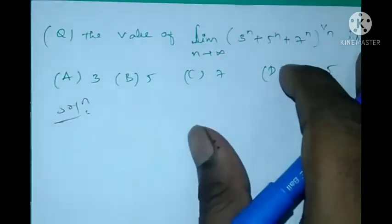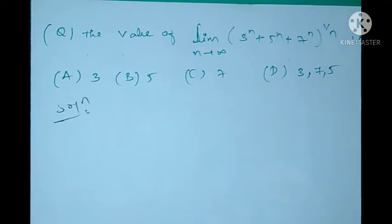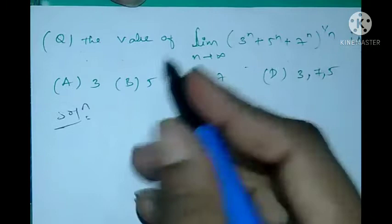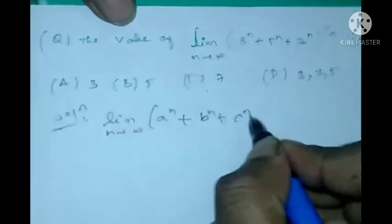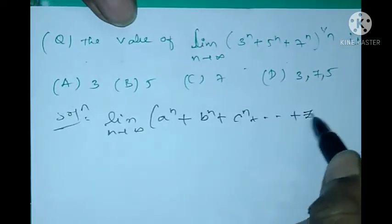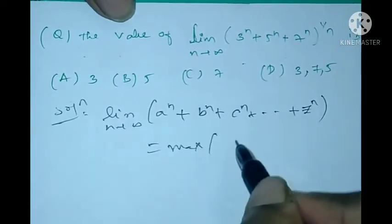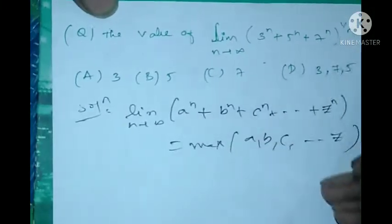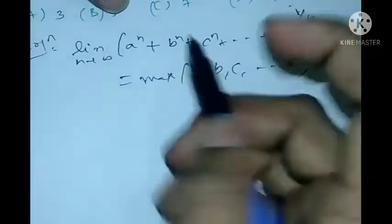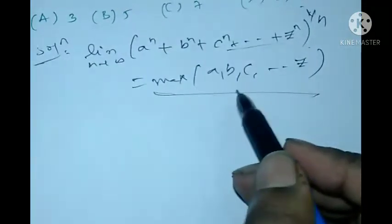We have to find the value of this limit. There are several methods to solve these kinds of limits, but I give the simple trick to solve these problems within one minute. The trick is: if the limit as n tends to infinity of (a^n + b^n + c^n + ... + z^n)^(1/n), then this is equal to the maximum of a, b, c, and so on. This is the trick — apply it to this question.